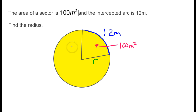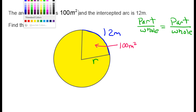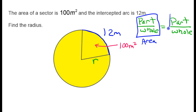When dealing with sectors and arc length, what you will often hear me say is: part over whole equals part over whole. For the first part over whole, I'm going to let that be area, and for the second part over whole, I'm going to let that be length.